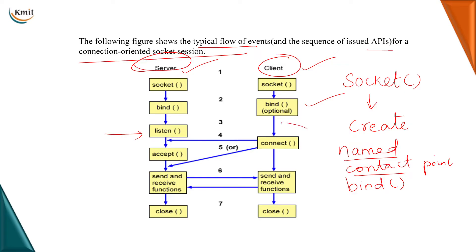The client makes use of a function called connect to request a connection from the server. Since the client is requesting a connection and the server is ready to listen, the server will accept the connection. Once the connection is accepted, both the client and server can send and receive messages using the send and receive functions.